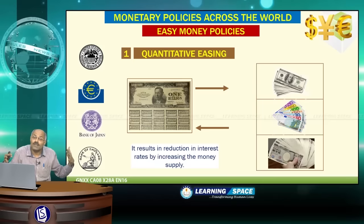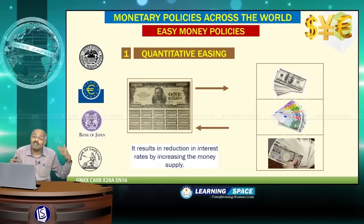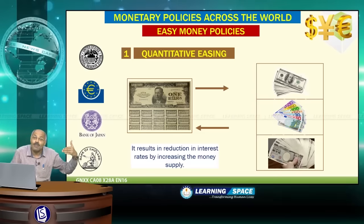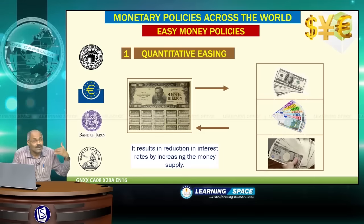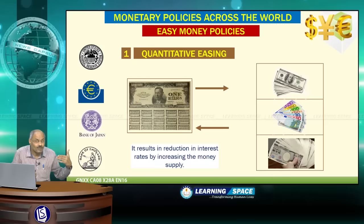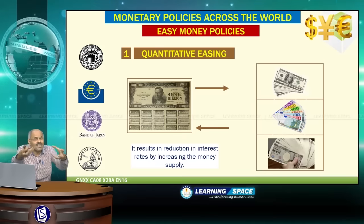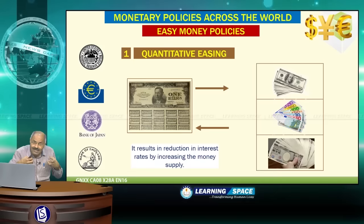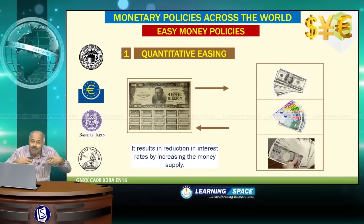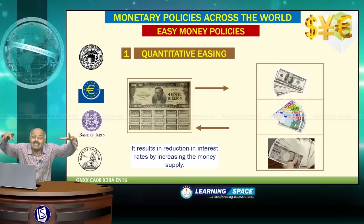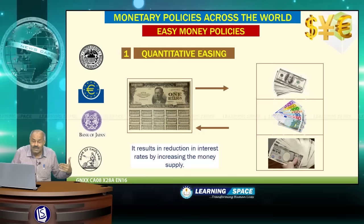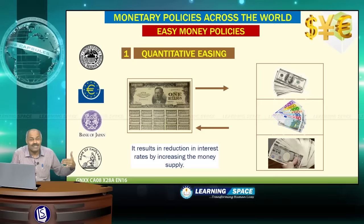Looking at monetary policies across the world over the past 7–8 years, especially after the 2008 financial crisis, advanced economies have quite often resorted to quantitative easing. Quantitative easing means purchasing government securities every month by announcing it in advance — central banks buy government bonds from the market, which puts a lot of money into circulation and results in a reduction of interest rates due to increased money supply.